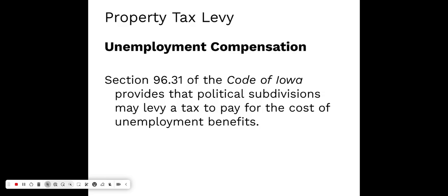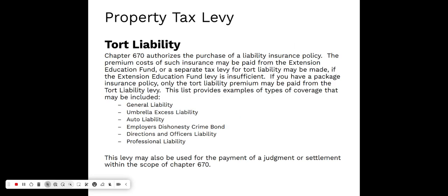Another property tax levy that may or may not be used within your district is a levy for unemployment compensation. The authorization is found in Section 96.31 of the Code of Iowa, which provides that political subdivisions including Ag Extensions can levy a tax to pay for the cost of unemployment benefits.